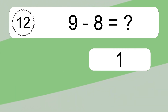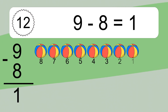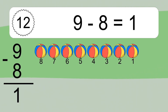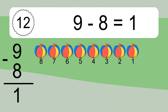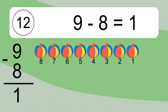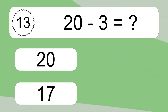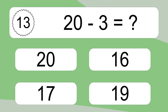9 minus 8 equals what? 9 minus 8 equals 1. Let's count it: 9, 8, 7, 6, 5, 4, 3, 2, 1.